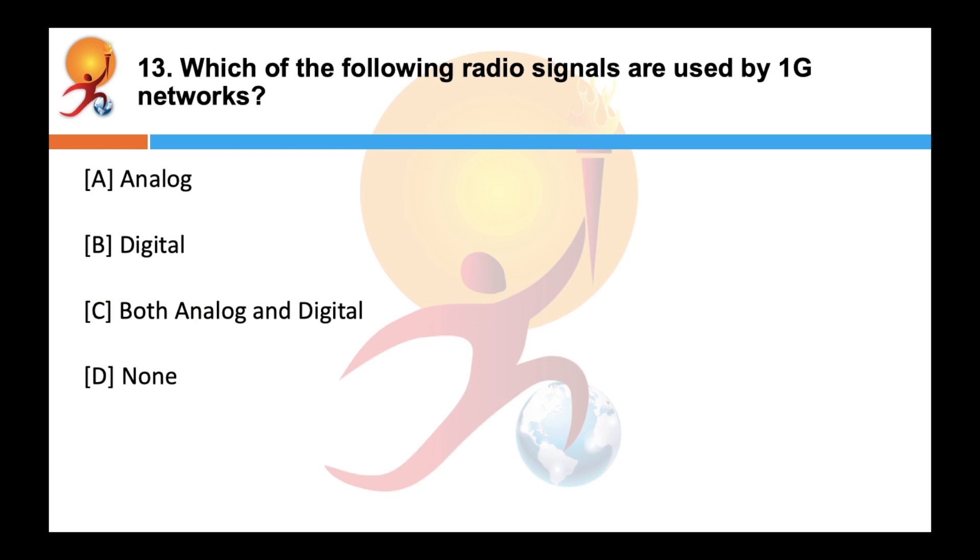Which of the following radio signals are used by 1G networks? Correct answer is A. The radio signals used by 1G networks are analog, while the radio signals used by 2G networks are digital. This is one of the main differences between 1G and 2G.